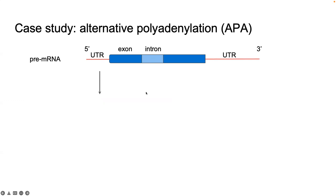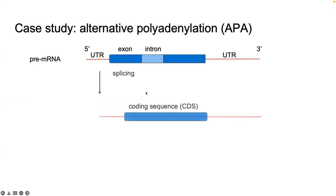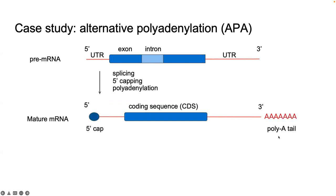There are several key processing steps that are undergone to process the pre-mRNA, namely splicing — the removal of introns and joining of exons — 5' capping, and cleavage and polyadenylation, where the pre-mRNA is cleaved and a poly-A tail is added.